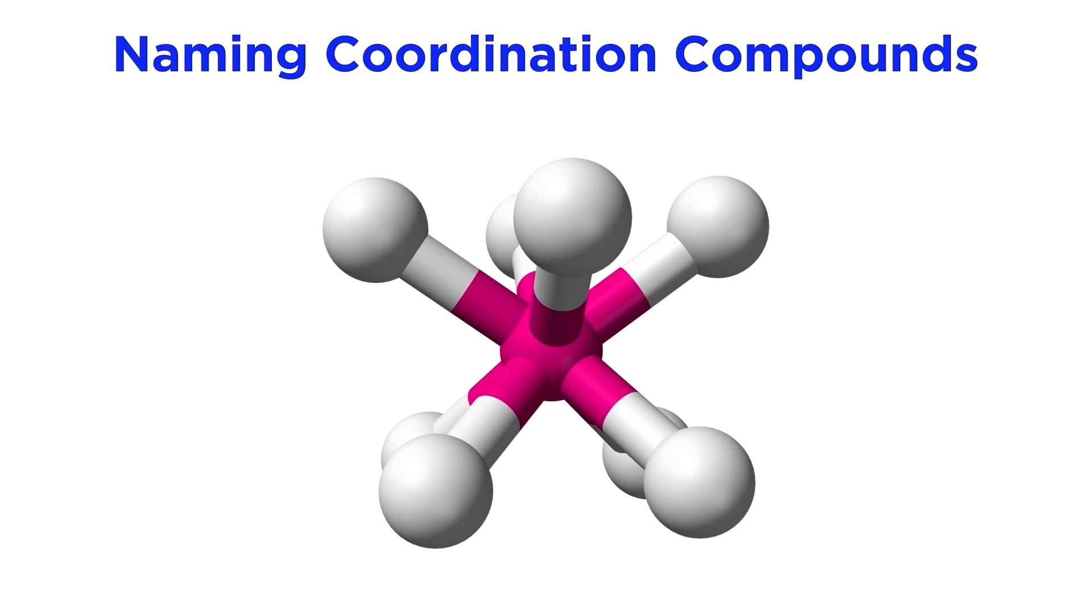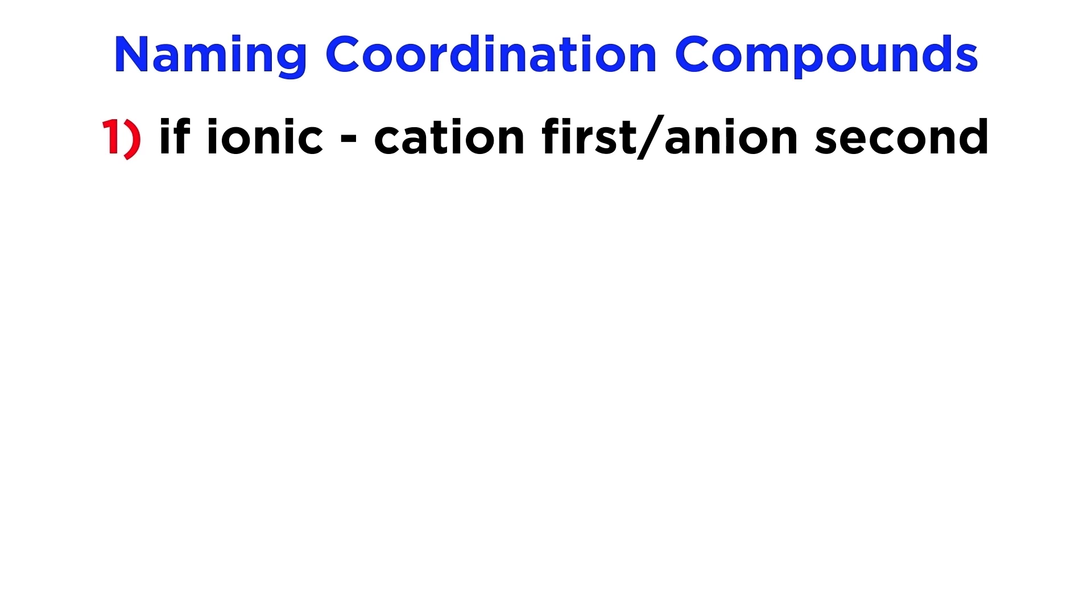Beyond understanding the geometry of coordination compounds, we also have to be able to name them, so that we can communicate concepts about these molecules. The rules for the nomenclature of coordination compounds are as follows. First, if a coordination compound is ionic, we will name the cation first, and then the anion, in accordance with typical nomenclature rules.